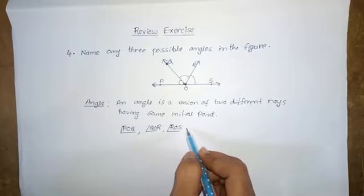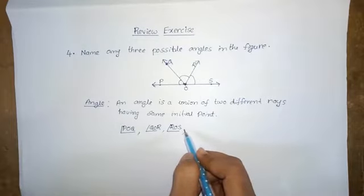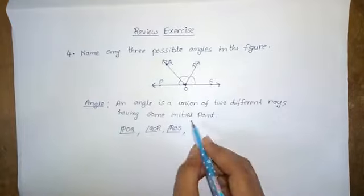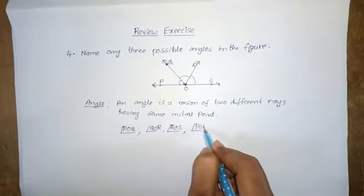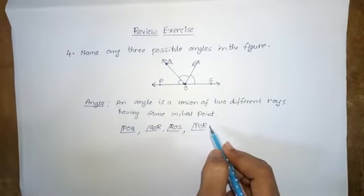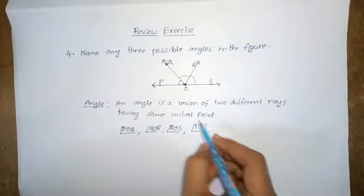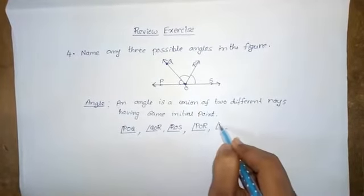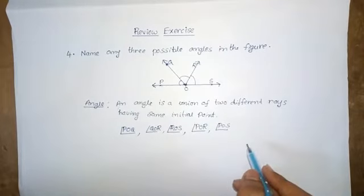So three possible angles in this figure are angle POQ, angle QOR and angle ROS. Other angles are also present, such as angle POR and straight angle POS.